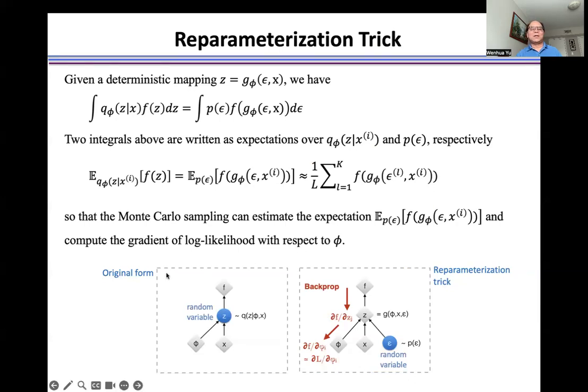Namely, in the original problem, because z is a random value, we cannot calculate the gradient of log likelihood to train the model using the backpropagation method.